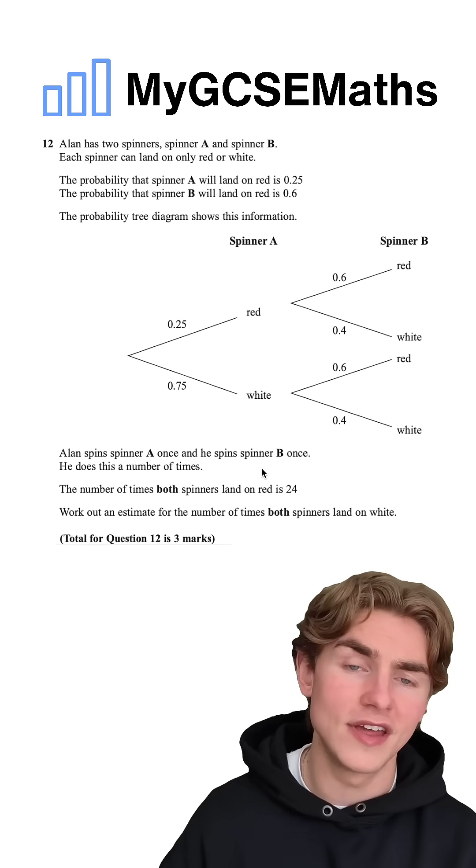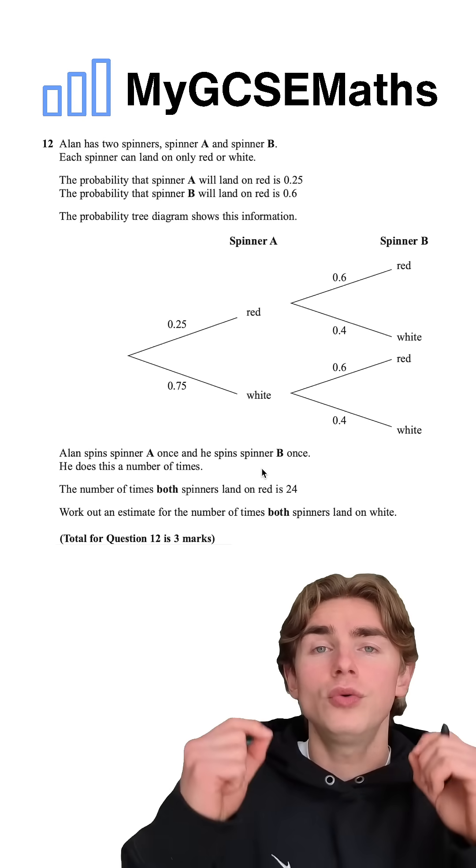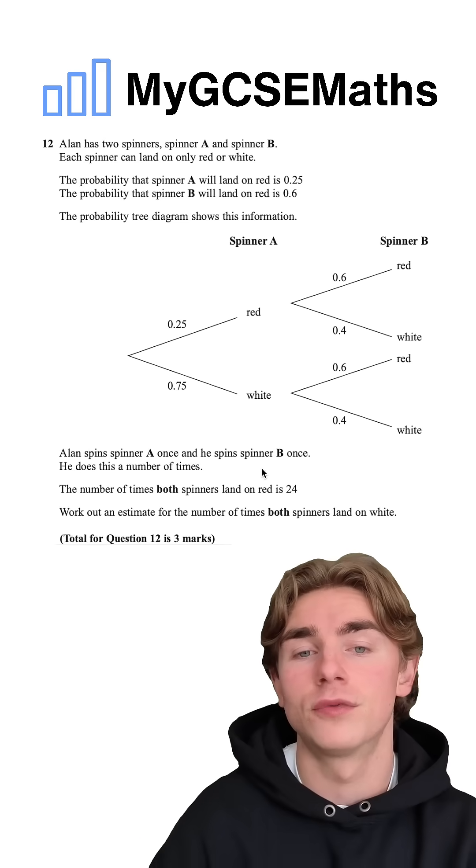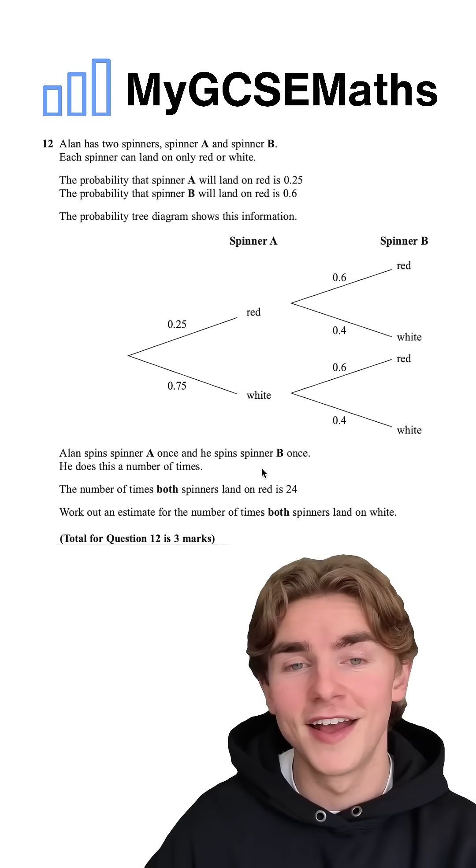There's a couple of different ways to do this. I'm going to reverse engineer this to find an estimate for the total number of spins. Then we're going to multiply this by the probability of getting white, white. Let's get it done.